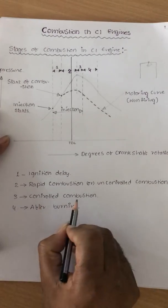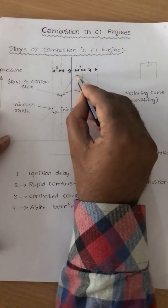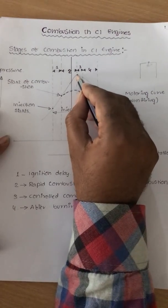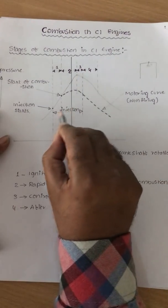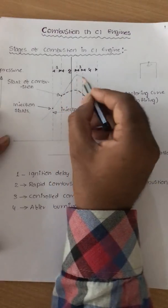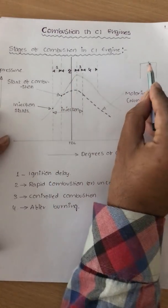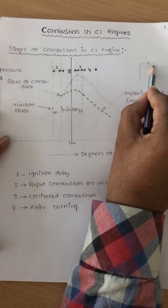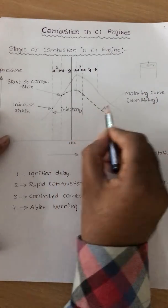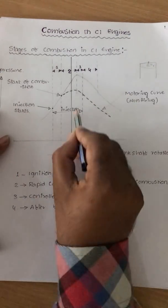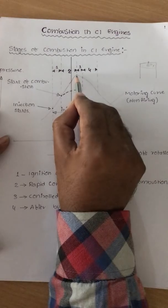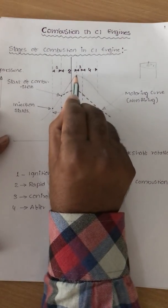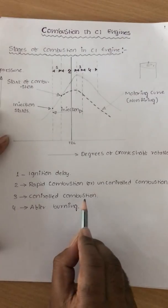The third stage is controlled combustion. After reaching the maximum pressure and temperature, we cannot conclusively say that there is no fuel injection. Even after reaching maximum pressure and temperature, the fuel is still continuously injecting into the combustion chamber. The combustion is still continuing even after reaching maximum pressure and temperature — that is called controlled combustion.